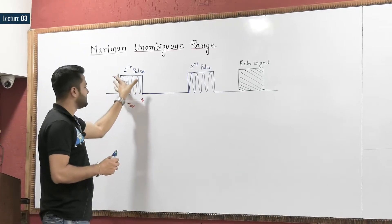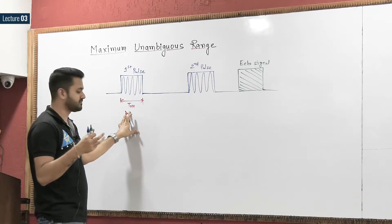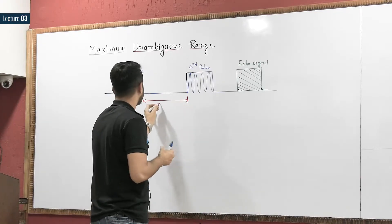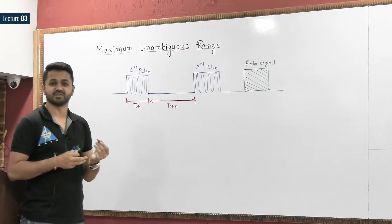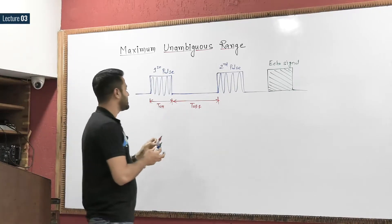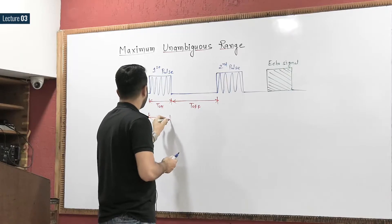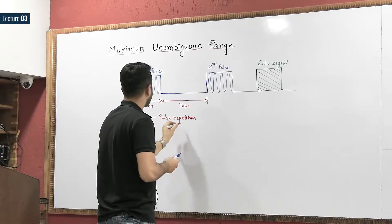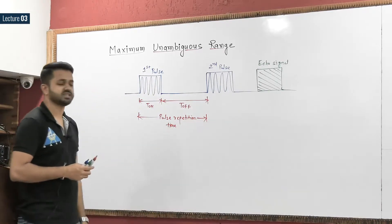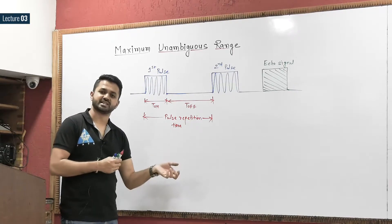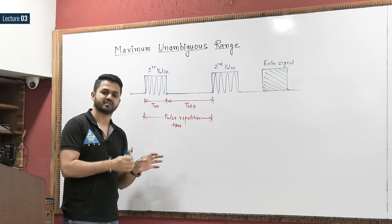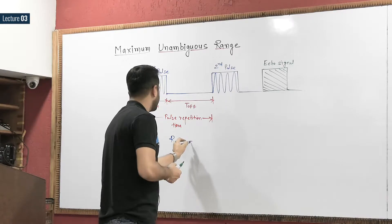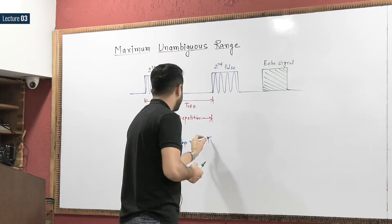We have a pulse of width T_on (the transmitted pulse width), and we wait before the next pulse is transmitted. That waiting duration is denoted as T_off, because no signal is transmitted during that period. The total time — T_on plus T_off — is known as the pulse repetition time. Before the pulse repetition time elapses, if we get the echo signal, we will have the correct range, defined as c times the pulse repetition time.